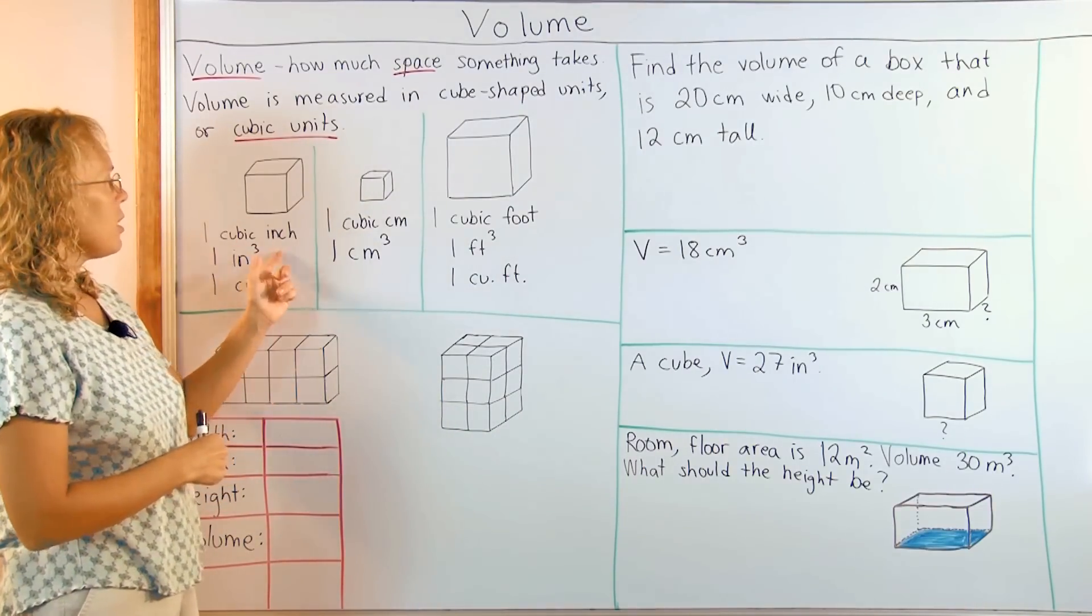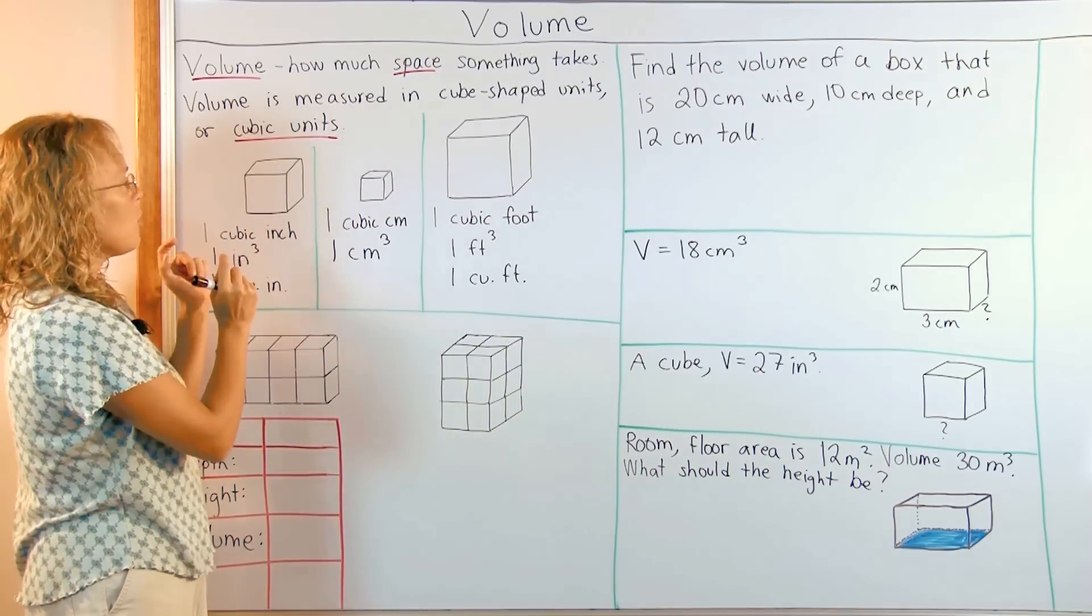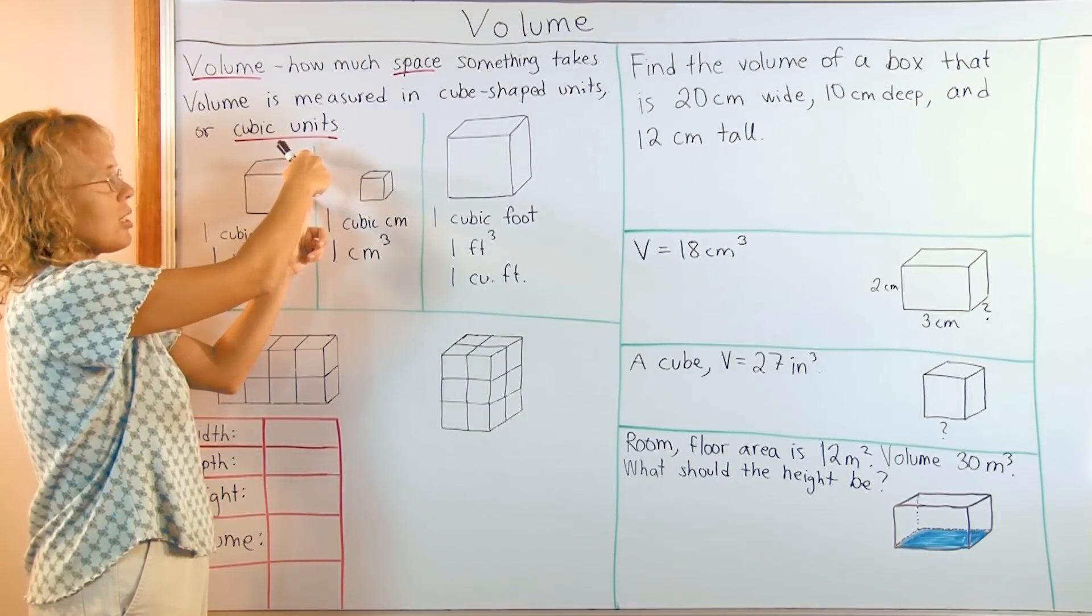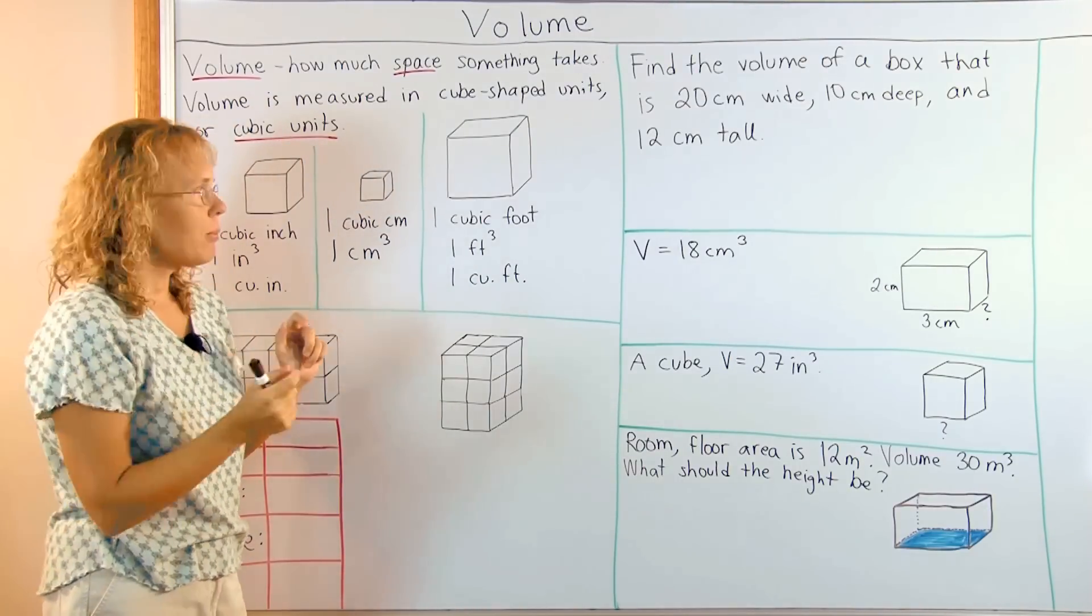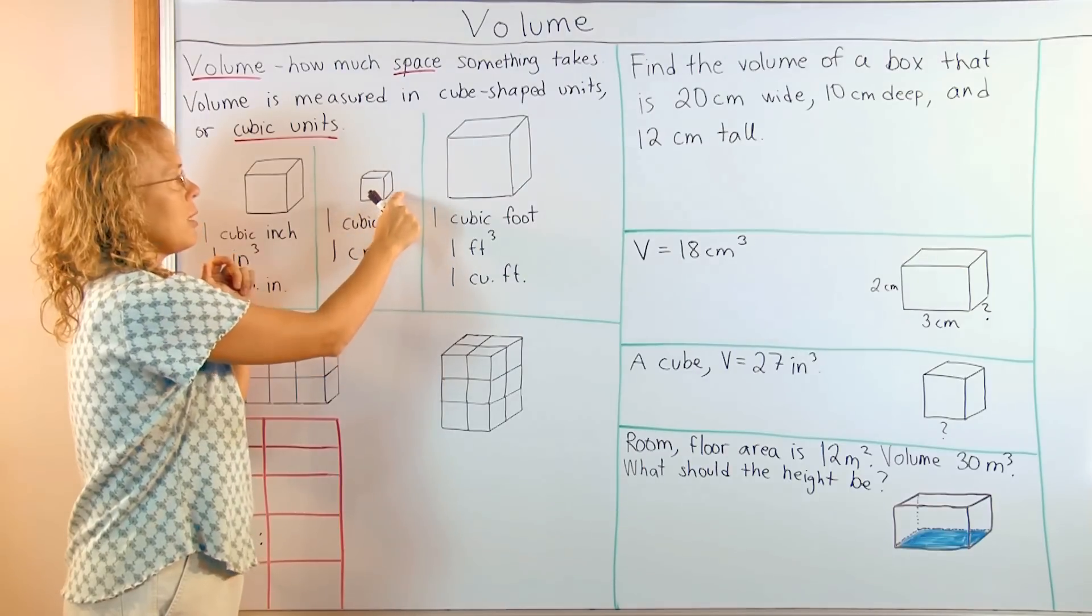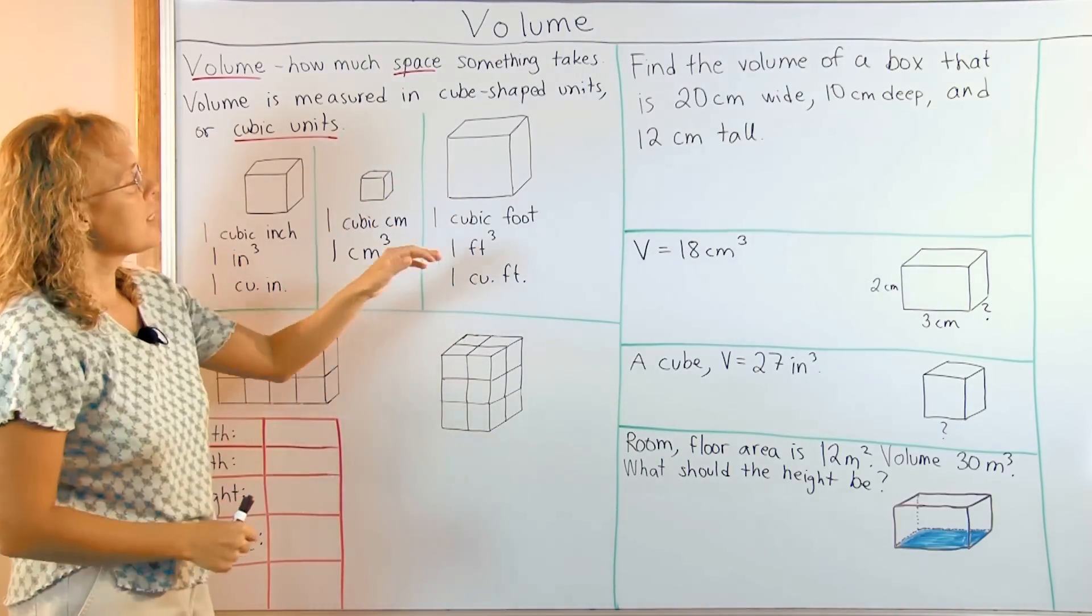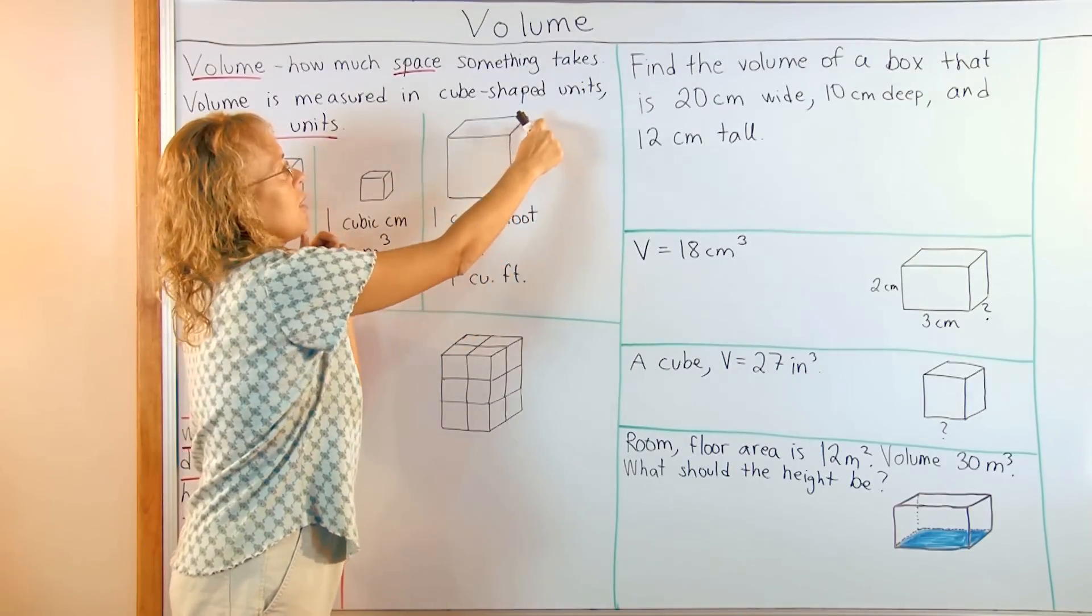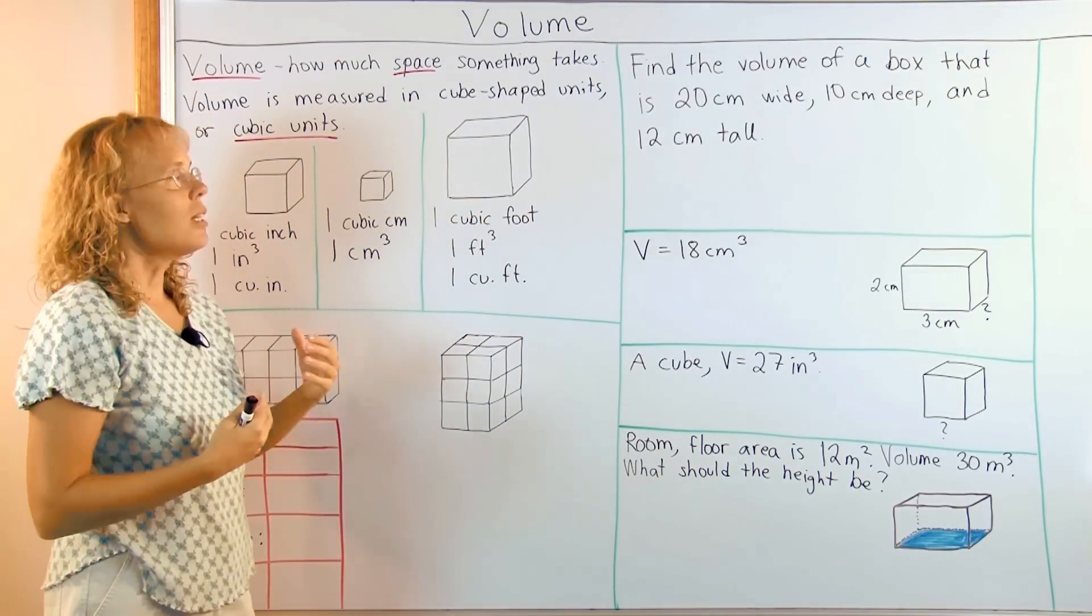For example, one cubic inch means that this little cube has one inch side, one inch side and one inch side like that. One cubic centimeter means that this side here is one centimeter, this side is one centimeter and this side is one centimeter. And similarly for one cubic foot, one foot here, one foot here, one foot here. And we get the cube out of that.